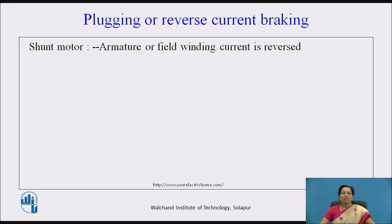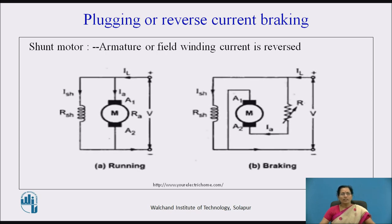For plugging or reverse current braking of a shunt motor, the armature or field winding current is reversed. In the diagram, the armature connections are reversed: A1 is connected to the negative terminal and A2 is connected to the positive terminal. So the current direction is reversed, that is upward. The torque created due to this connection is reversed, which creates braking on the motor and reduces its speed.